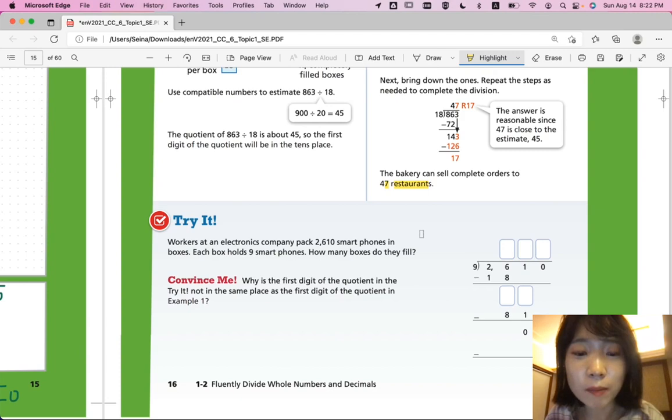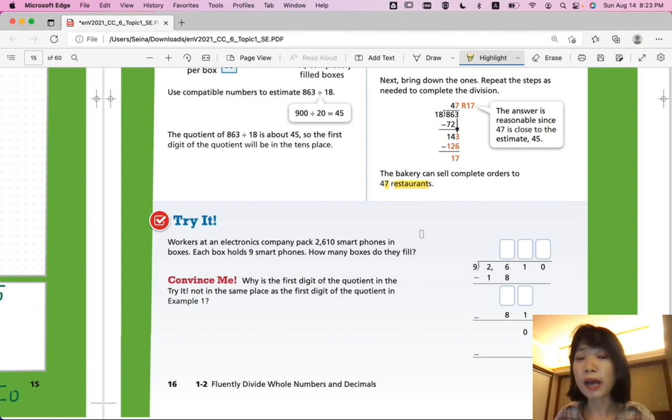Let's look at try it on the bottom. Workers at an electronics company pack 2,610 smartphones in boxes. Each box holds 9 smartphones. How many boxes do they fill? Again, each box has to hold 9 smartphones. It cannot be less than it is not a complete box. So, you're going to divide 2,610 by 9 here. And they already tell you that the remainder is going to be 0. So, you have a nice little whole number as an answer. How many boxes do they fill? So, take time and think about it and solve it. Come back when you're ready for answers.